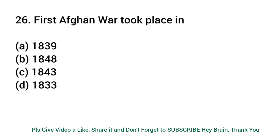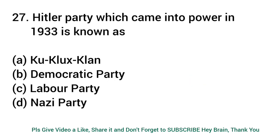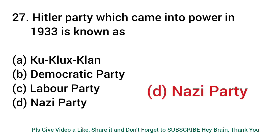First Afghan war took place in? Answer: 1839. Hitler's party which came into power in 1933 is known as? Answer: Nazi party.